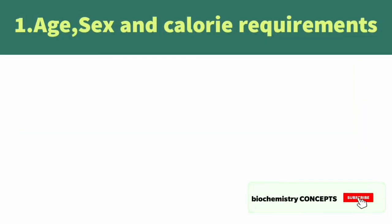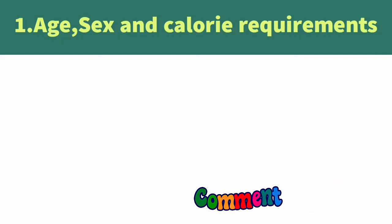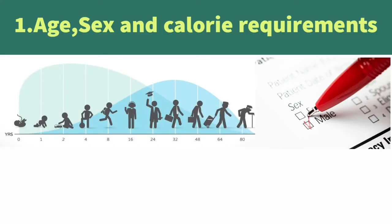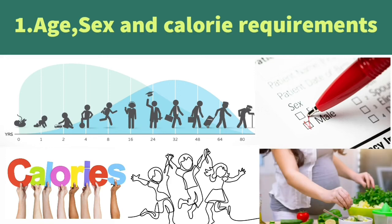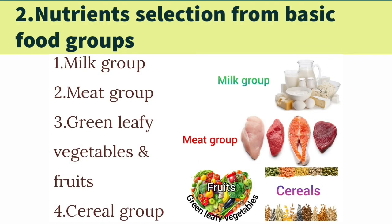Regarding age, sex, and calorie requirements: while planning a diet for any individual, you have to consider the individual's age, sex, and physical activity. You also have to consider special nutritional needs like growing children and pregnant and lactating women. Requirements will be different for these special cases. You should calculate the total calorie requirement and requirement of other nutrients, and then select foods from the basic food groups so that their total nutritive values satisfy the estimated calorie and nutritive requirements.